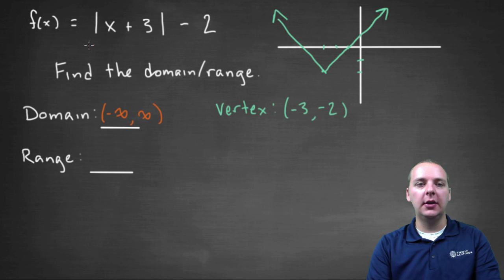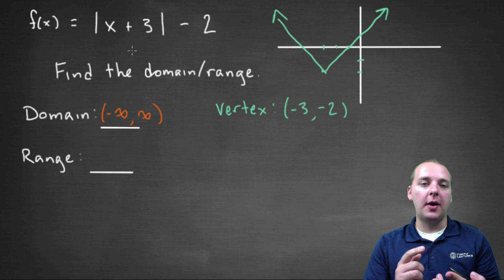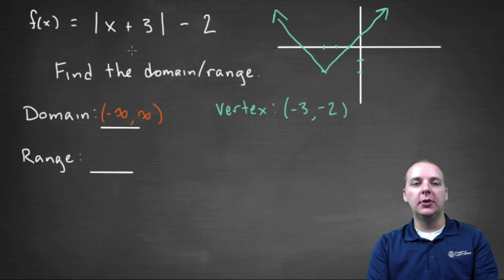Now, how did I know that so fast? There's no X that I couldn't take the absolute value of. So the absolute value function causes no problems. I would never get division by zero. I would never have a negative under a square root, because there's not a square root and there is no division. And so if it's just an absolute value type function, the domain will be all real numbers.